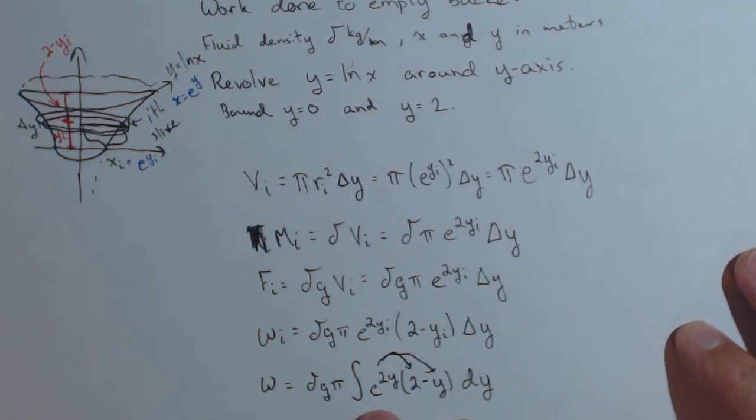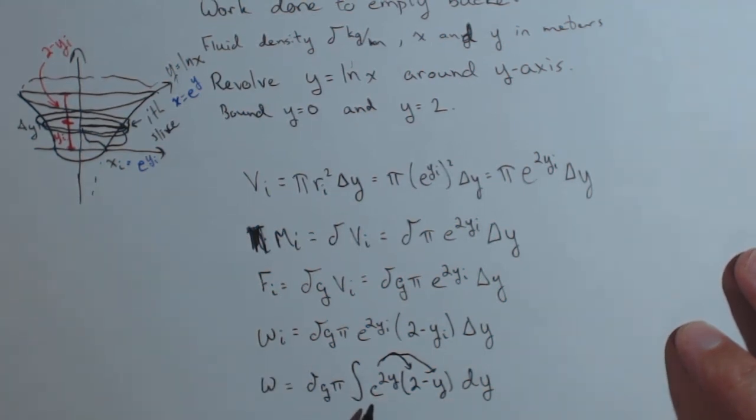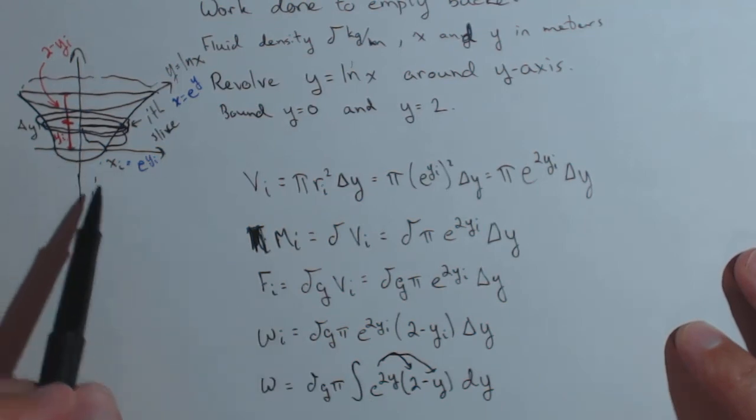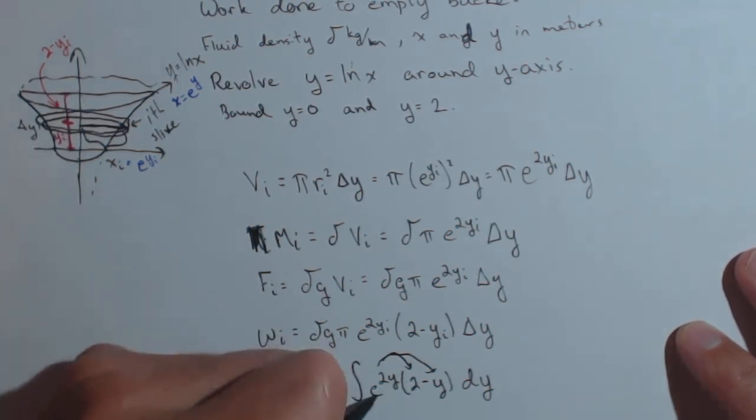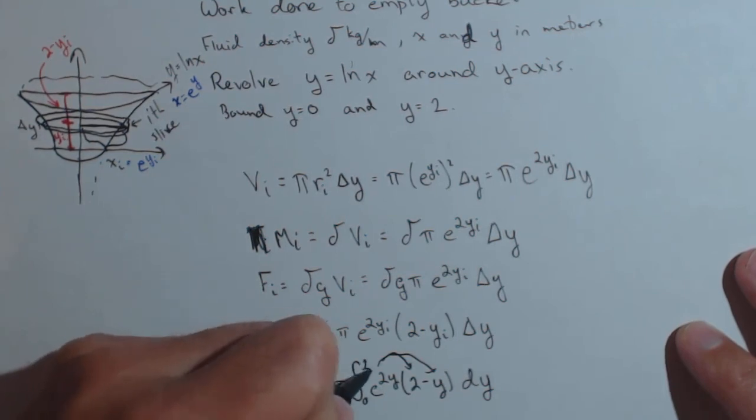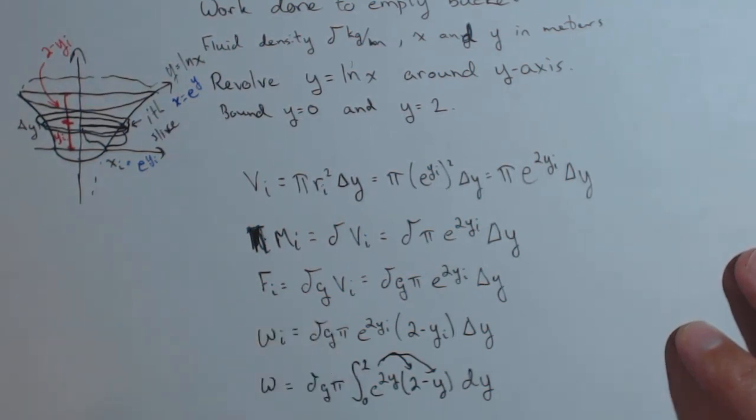You could also use technology at this point. Oh, we didn't put in our limits. Let's put those in because they're important. Y ranges from 0 to 2; we're integrating over the slices of the fluid. So 0 to 2. And there's our definite integral for calculating work.